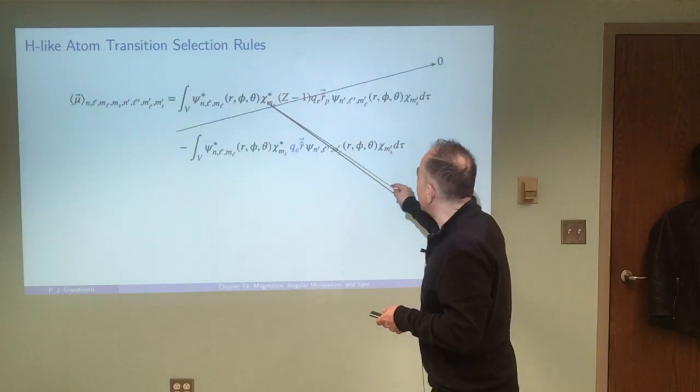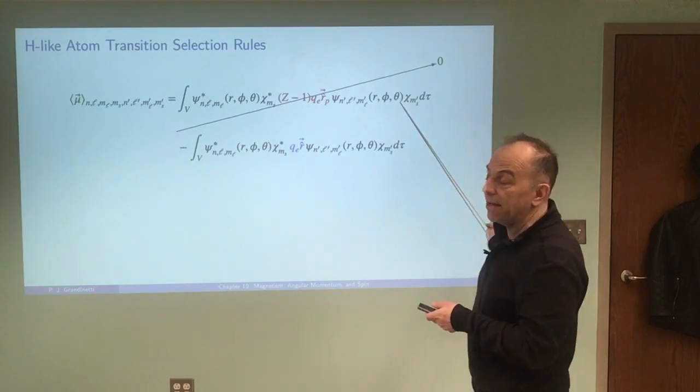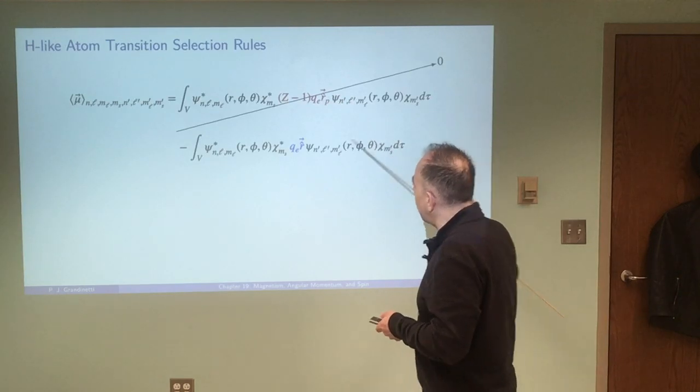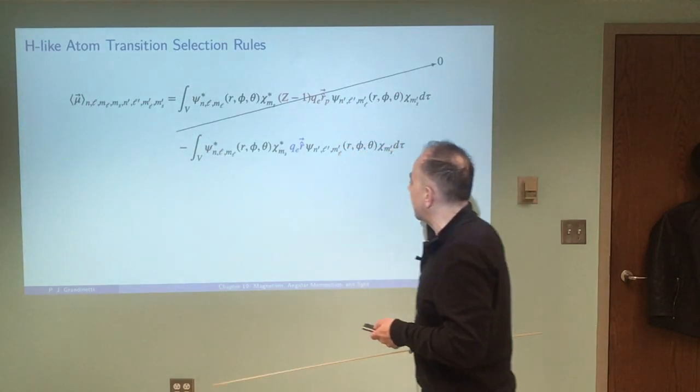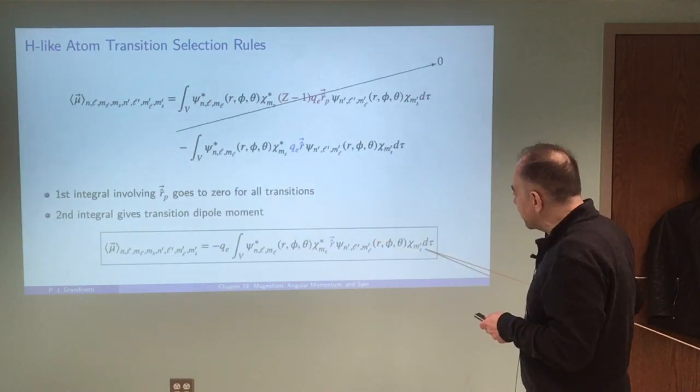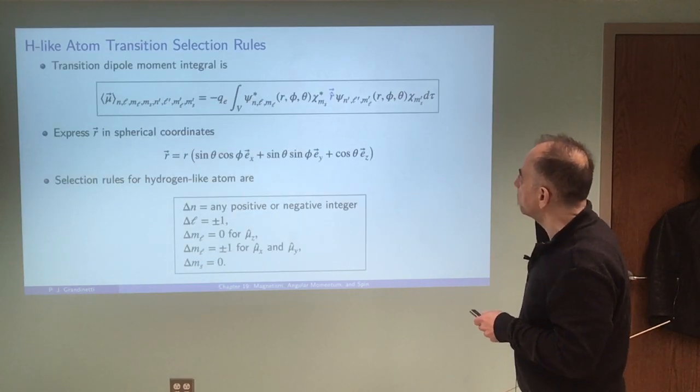So what that means is that this term is just going to go to zero because of the orthogonality of the wave functions and that leaves us only with this term to evaluate to get the transition dipole moment integral. So that leaves us with this term and this is where we're going to focus our attention to get those selection rules.